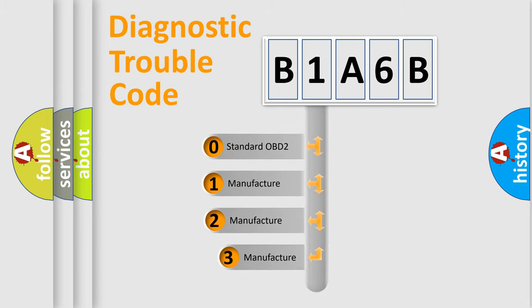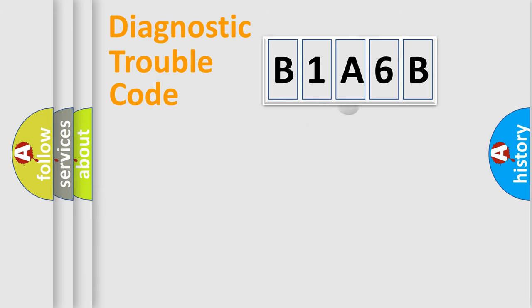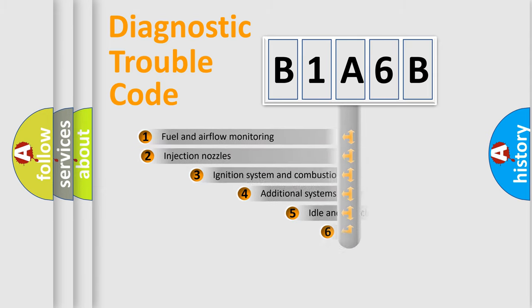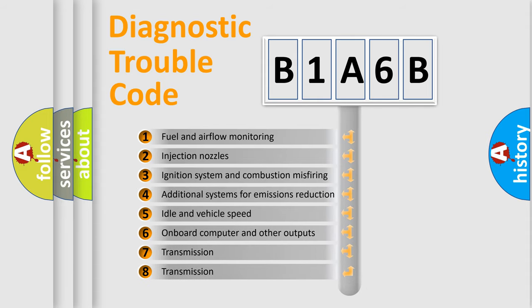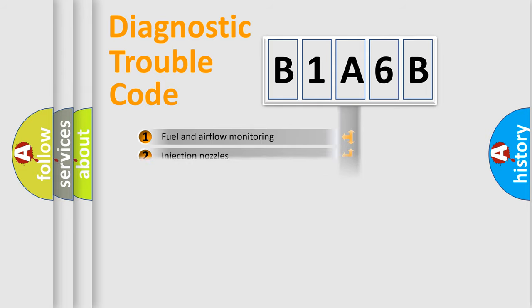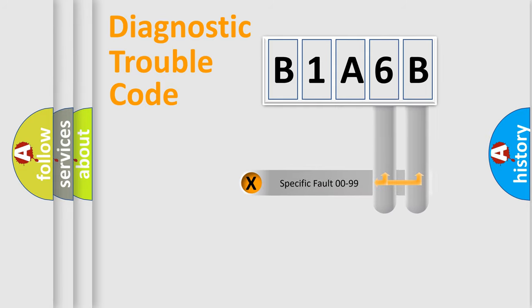If the second character is expressed as zero, it is a standardized error. In the case of numbers 1, 2, 3 it is a manufacturer-specific error. The third character specifies a subset of errors. The distribution shown is valid only for the standardized DTC code. Only the last two characters define the specific fault of the group.